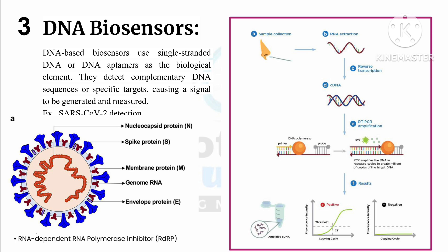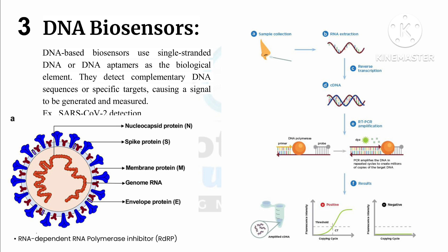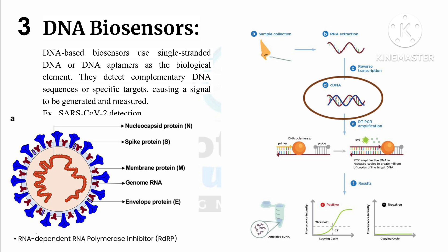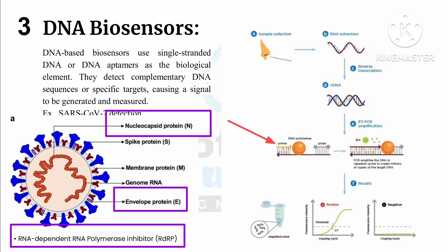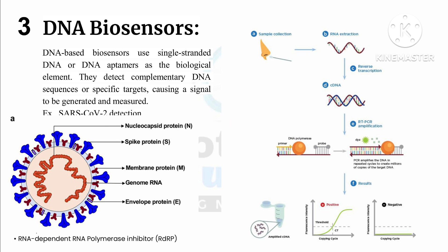In the PCR process, the RNA extracted from SARS-CoV-2 is converted into cDNA, and that cDNA serves as a template for amplification. Specific primers — short DNA sequences designed to match segments of SARS-CoV-2 genes such as the N, E, and ORF1ab genes — are used. These primers ensure that only the SARS-CoV-2 RNA is amplified.